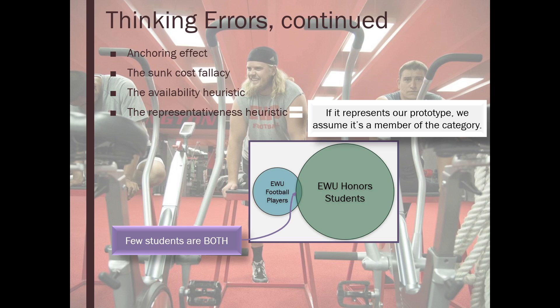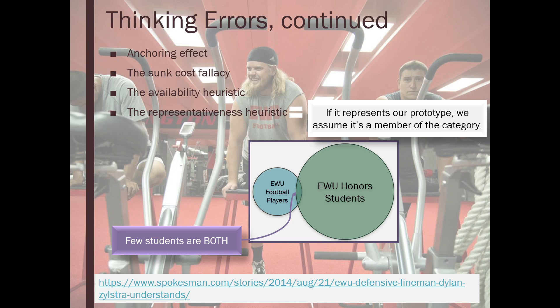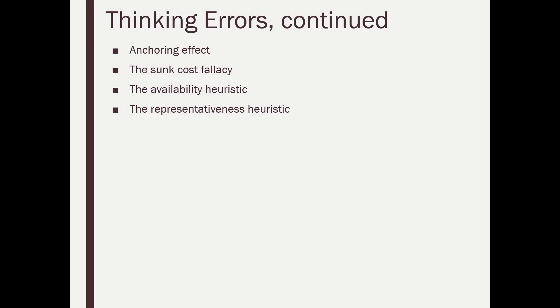Just FYI — I pulled this picture from the Spokesman Review, and these are actual Eastern Washington University football players from a few years ago, so I'm not just stereotyping and saying people wearing football shirts in the gym are football players — these really are football players. The representativeness heuristic sounds a lot like stereotyping. If the case in front of us matches our prototype well enough, we assume they belong to the category.